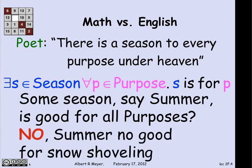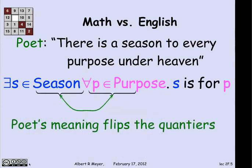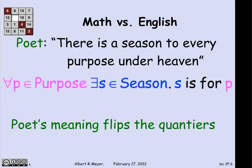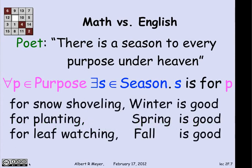That's not right, because summer is not good for snow shoveling. If your purpose is to shovel snow, then summer will not do for you as a season. So even though it's phrased "there is a season to every purpose under heaven," it's not the case that the intended translation is "there is one season for every purpose." In fact, the poet really means to flip the quantifiers — we switch them around so that we're really saying: for every purpose, there is a season such that s is for p. For snow shoveling, winter's good. For planting, spring is good. For leaf watching, fall is good.